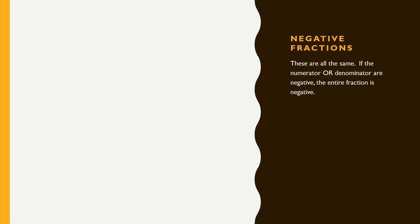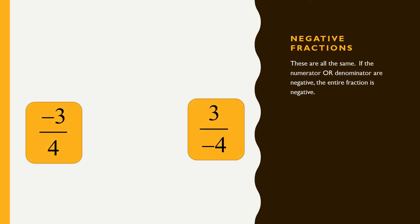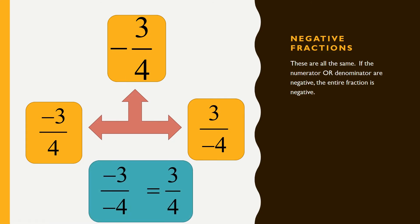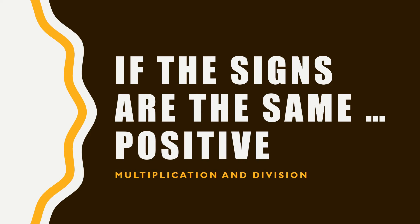So negative fractions — the entire number is negative, because they're just numbers. For example, negative 3/4 and 3 divided by negative 4 both equal the same thing: negative 3/4. All of those are the same, and negative 3 divided by negative 4 is positive 3/4 — completely different. The whole number is negative; it's a rational number, a ratio of integers, and the number itself is negative. So: if the signs are the same and you're multiplying or dividing, the answer is positive. If the signs are not the same, the answer is negative.